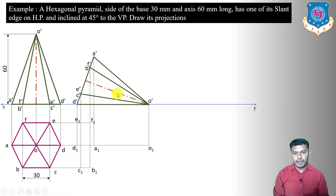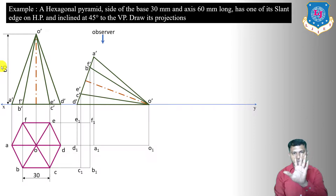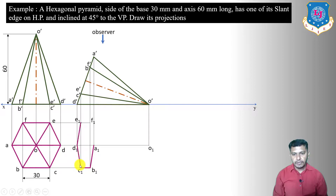When the pyramid is lying on its slant edge or triangular face on HP, the base is visible in the top view, because the observer sees the base facing them. The base points are rotated 180 degrees clockwise or anti-clockwise compared to the first stage. Draw the base as visible: A1–B1, B1–C1, C1–D1, D1–E1, E1–F1, since the base is nearer to the observer and therefore visible.